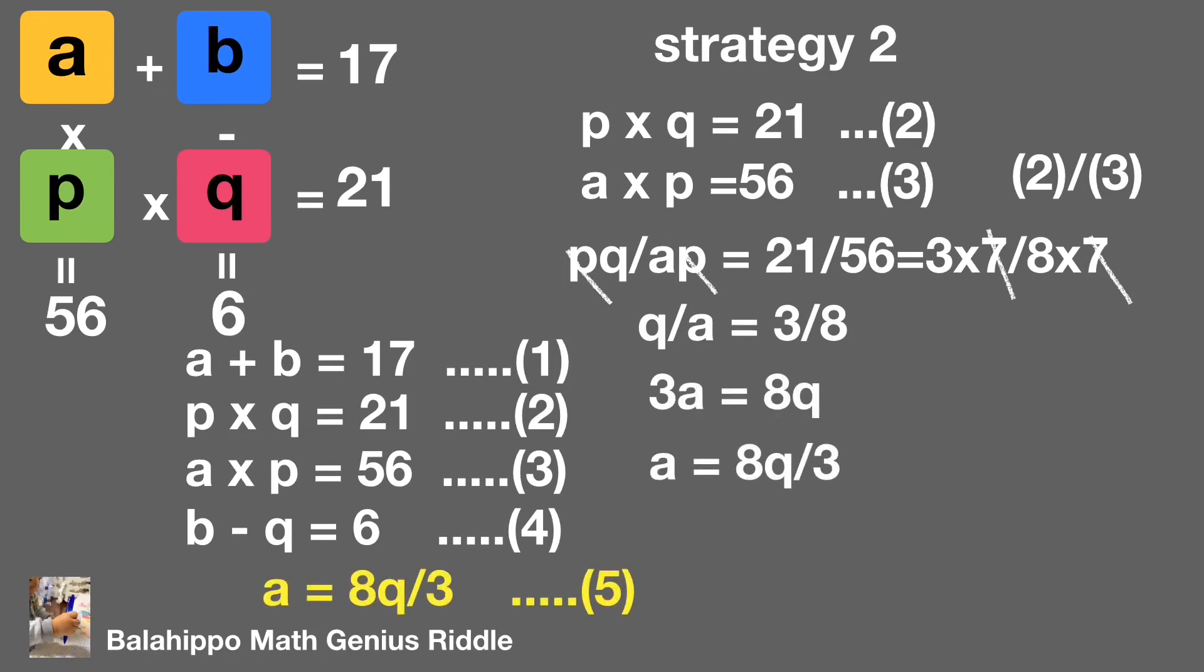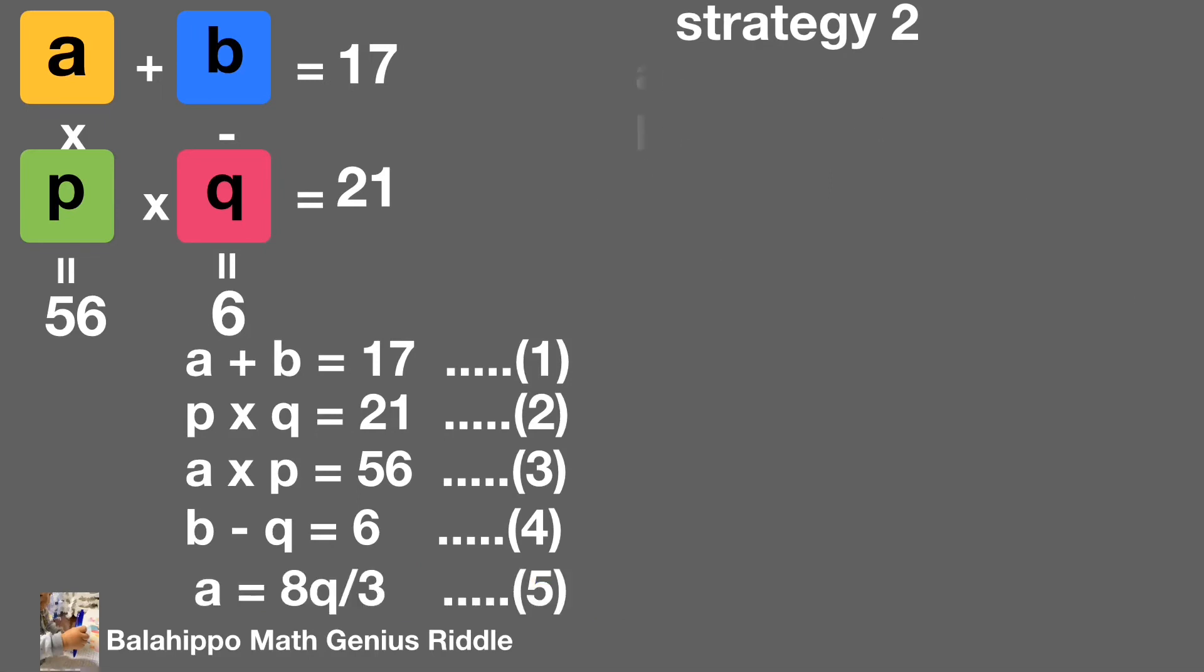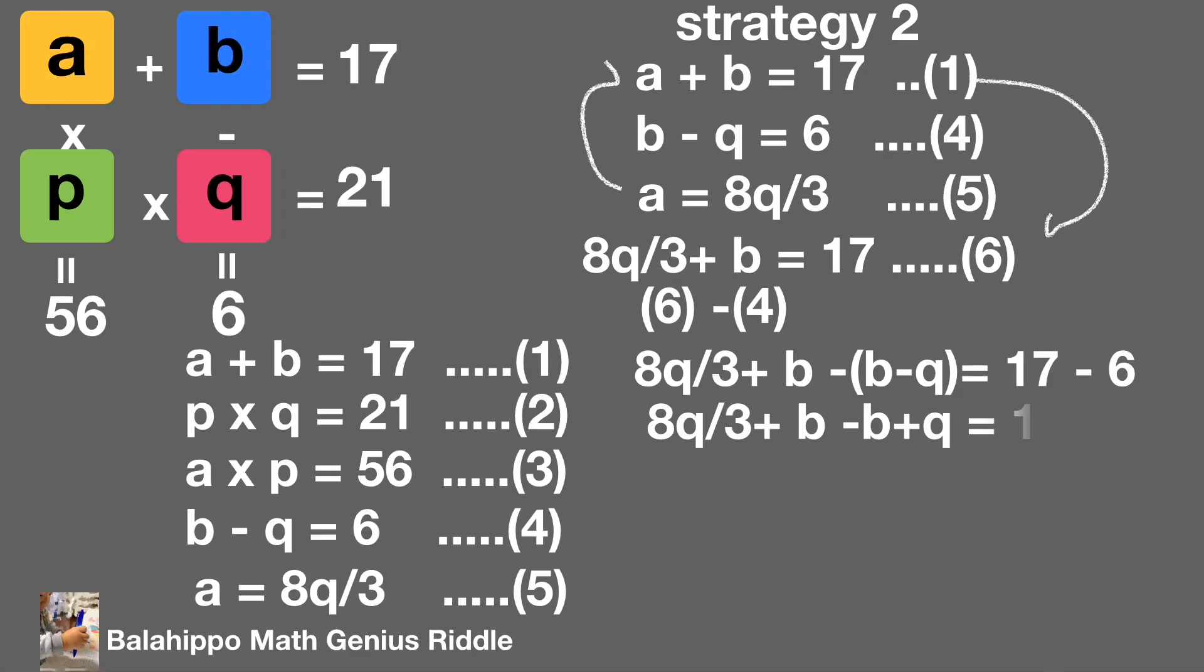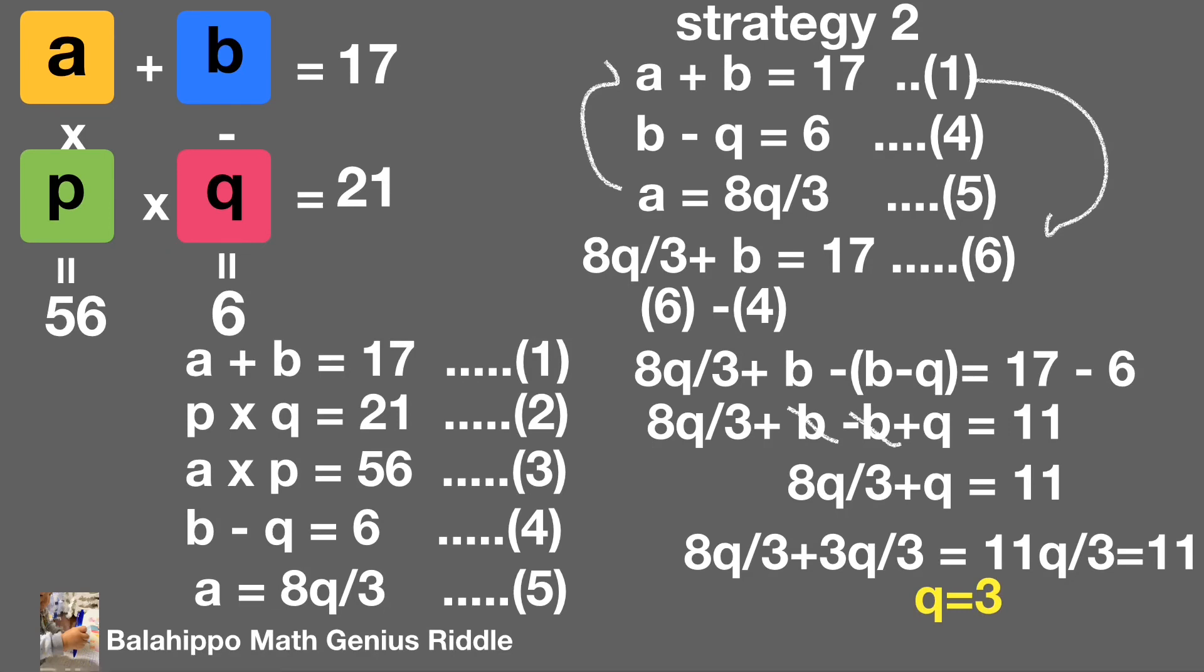Next, take equation 1, A plus B equal to 17, and equation 4, B minus Q equal to 6. Substitute A by 8Q over 3 in equation 1. The equation becomes 8Q over 3 plus B equal to 17. That's equation 6. Then equation 6 minus equation 4, we get the new equation. Simplify the equation, we get Q equal to 3.